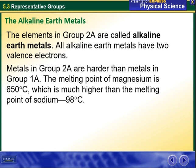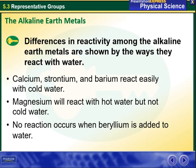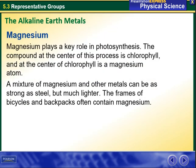The second group of the periodic table, group 2A, contains elements called the alkaline earth metals. All alkaline earth metals have two valence electrons. Calcium, strontium, and barium react easily with cold water. Magnesium will react with hot water but not with cold water. No reaction occurs when beryllium is added to water. Magnesium plays a key role in photosynthesis — the compound at the center of this process is chlorophyll, and at the center of chlorophyll is a magnesium atom.